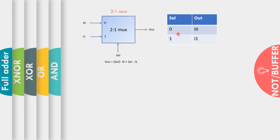This is shown in the truth table: when the select signal is 0, the output is I0, and when the select signal is 1, the output is I1. The same can be defined in the Boolean expression as: output = (select_bar · I0) + (select · I1).